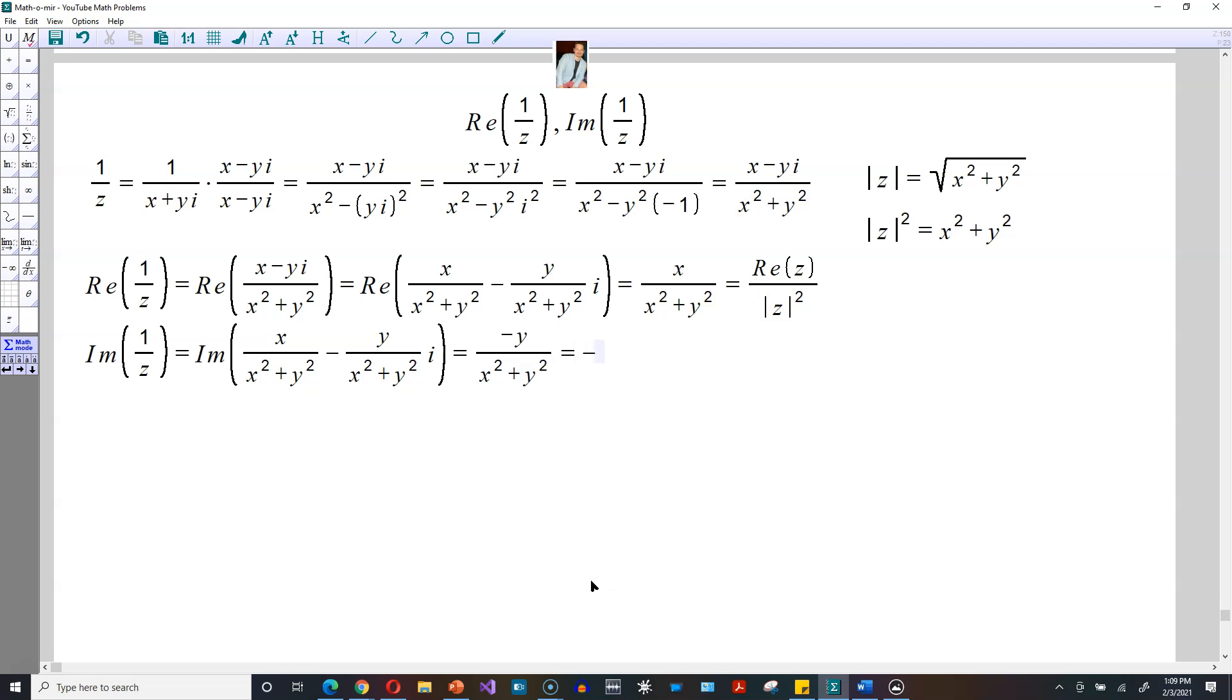But this is just negative. And y by itself, for a complex number of the form x plus yi, y by itself is the imaginary part of the number. So it becomes negative imaginary z.